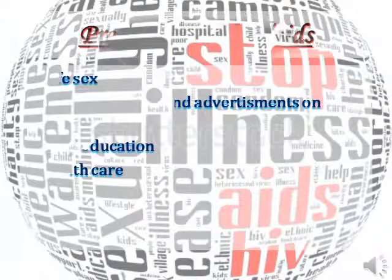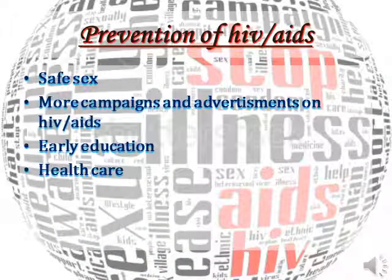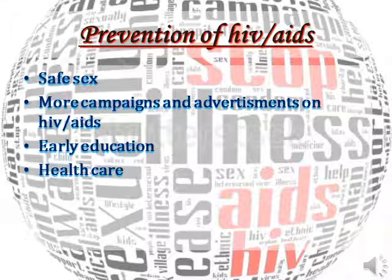Here are some considerations on the prevention of HIV from spreading. First, having safe sex — for example, using condoms or a diaphragm — and not having bisexual or multi-partner relationships. Second, government and non-government bodies should organize more campaigns and advertisements on HIV prevention. Third, education on the knowledge of HIV should be introduced to students at a younger age. Last but not least, having regular check-ups and vaccines are some of the ways to prevent the spread of HIV infection.